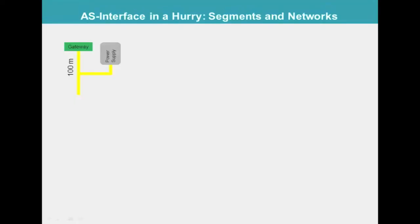Starting at the gateway, a linear AS interface segment can be up to 100 meters long. The segment must be powered using exactly one AS interface power supply.